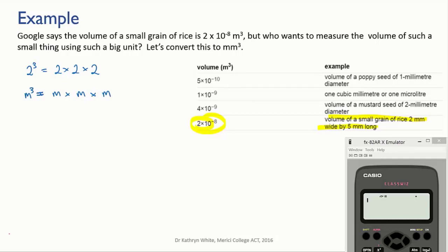These 3 meter units refer to the 3 dimensions of a cube: its length, its width, and its height.